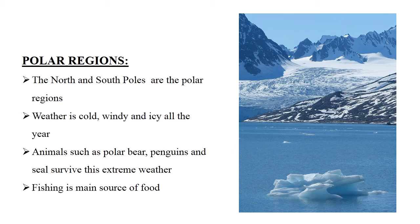The north and south poles are known as the polar region. The weather there is cool, windy, and icy all year round. Animals such as polar bears, penguins, and seals survive this extreme weather. There is little vegetation and fishing is the major source of food.